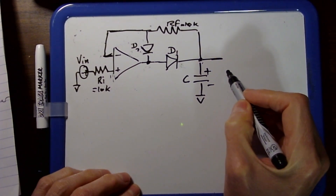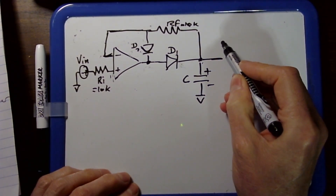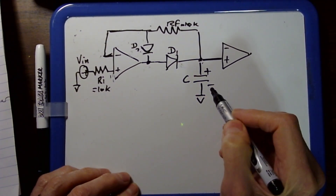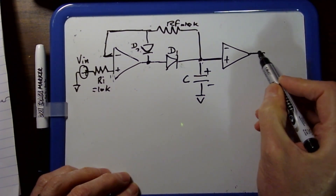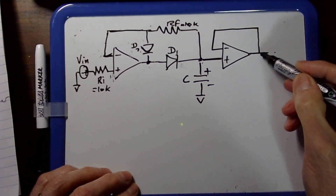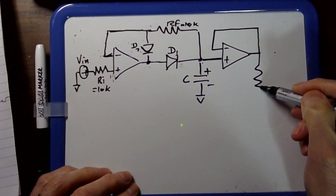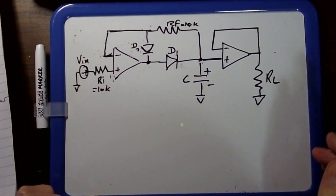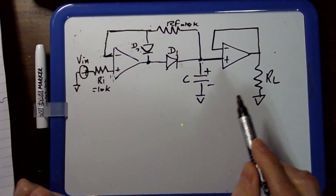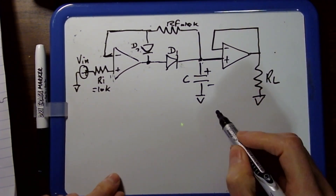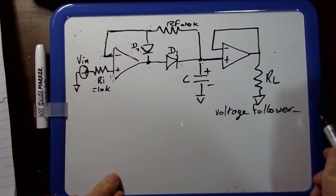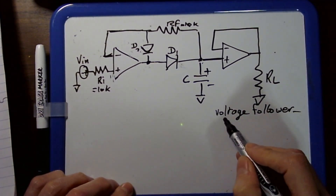We're going to look at a better solution using a second op-amp as a buffer on the output side. In the improved active peak detector, instead of going directly to the load, we add another op-amp. It has a very simple feedback loop — the output goes directly back to the inverting input. The load connects at the output of this second op-amp. The loading now can be anything; it has no impact on the discharge of the capacitor. This configuration is called a voltage follower.